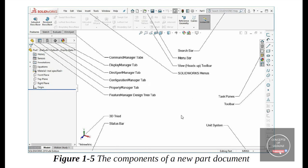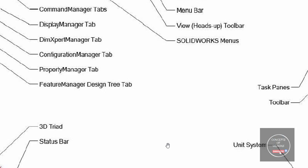The status bar will show whether your geometry is fully defined, under defined, or whether your model is constrained or not. There will be a message which will appear here — I will discuss each and everything in this video, so don't worry about that. This one is the SOLIDWORKS menu, where you will find File, Insert, Tools, Windows, and lots of other things.